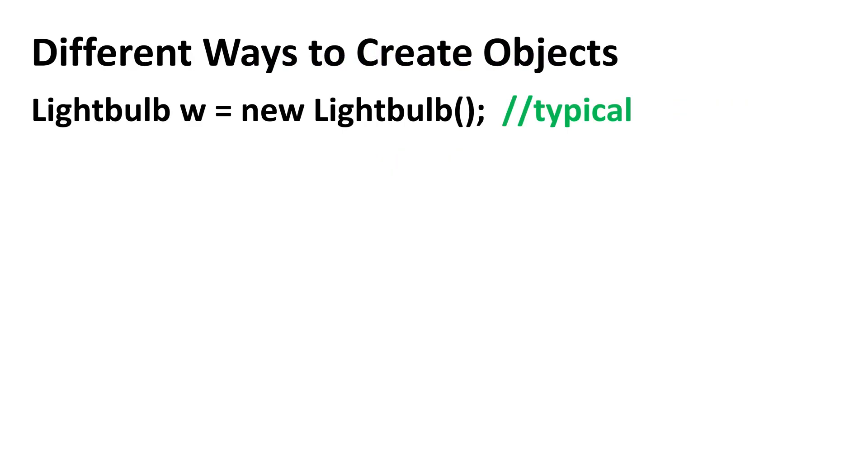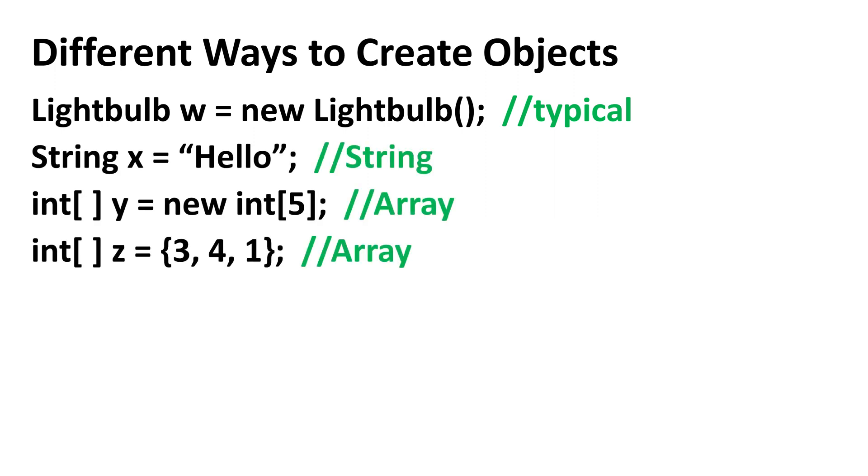Before we end, I want to mention that there are a few classes that have unique ways of creating objects. Some examples include the string class and the array class. Don't worry about those now, but be aware that there are exceptions.